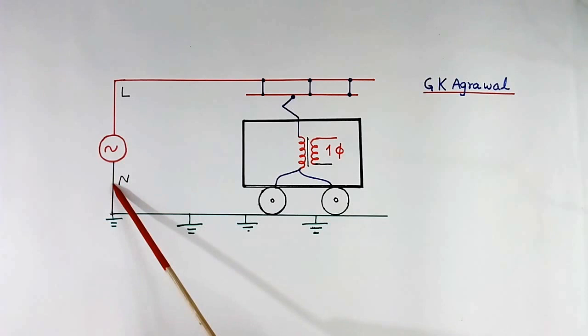Now for neutral, no wire comes. This track itself is used as a return wire.